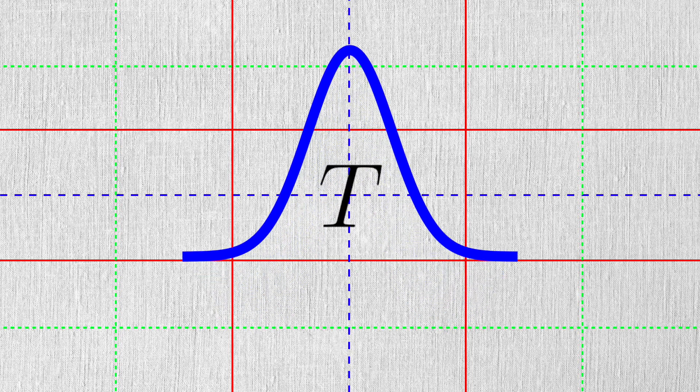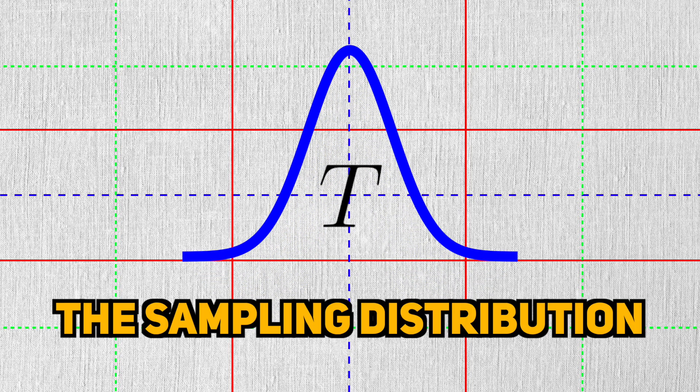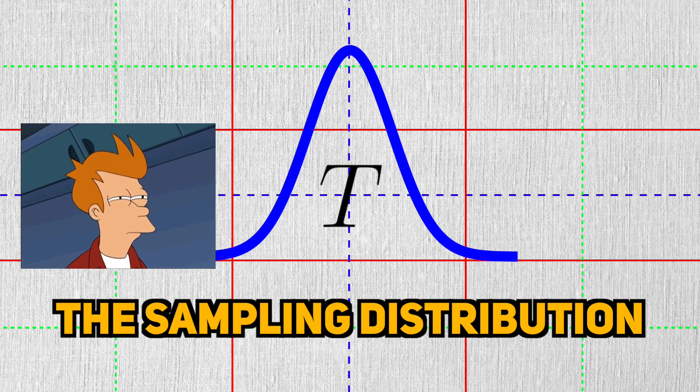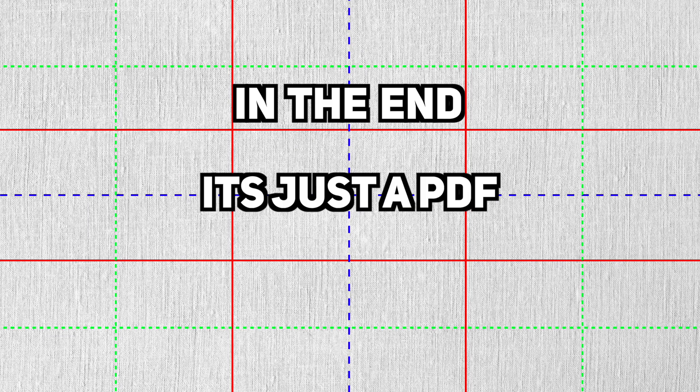This distribution is so important that it has a special name, the sampling distribution. Don't let the fancy name distract you. In the end, it's still just a PDF, a PDF of a statistic.